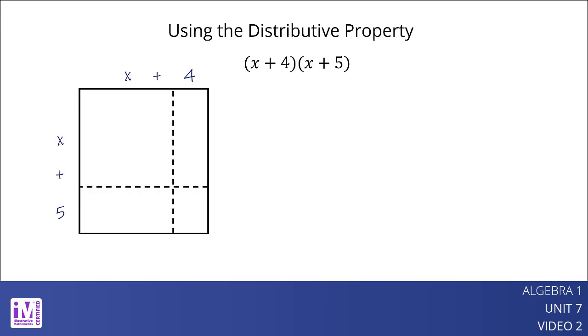We can find the products of each pair in the spaces. This helps us see that the quantity x plus 4 times the quantity x plus 5 equals x squared plus 9x plus 20.